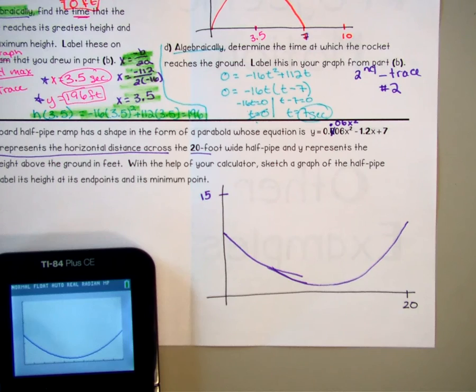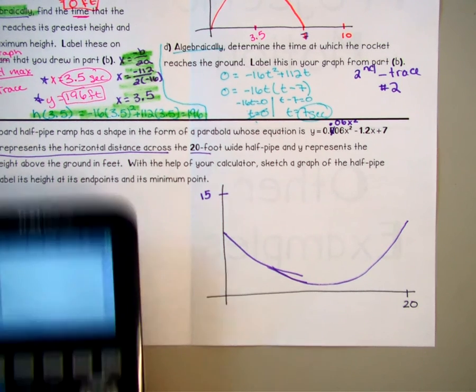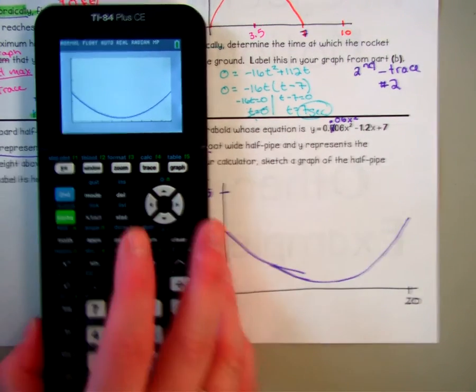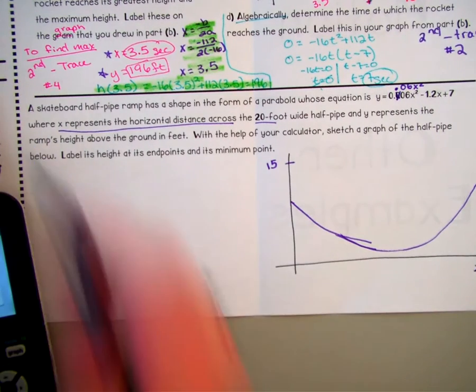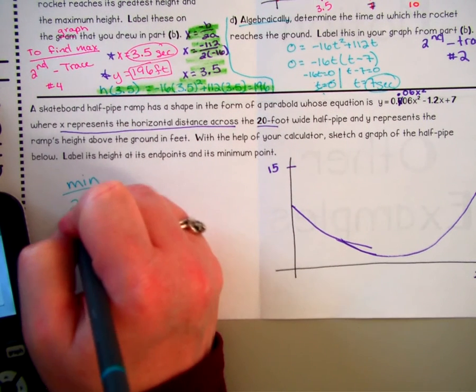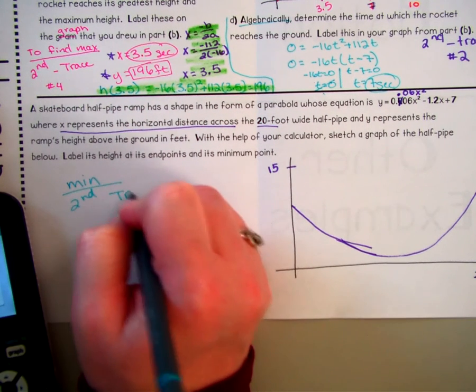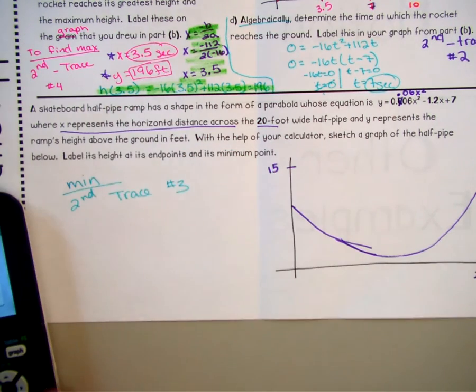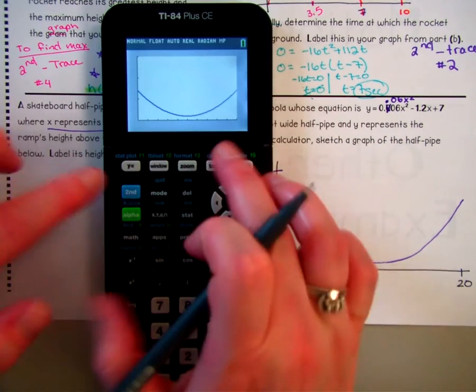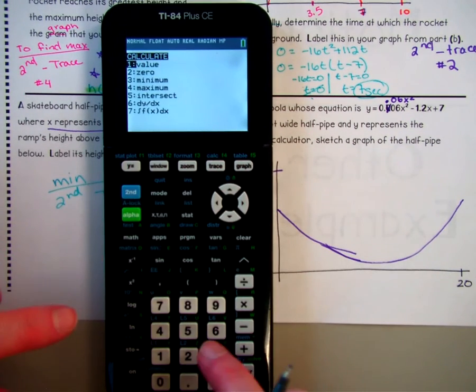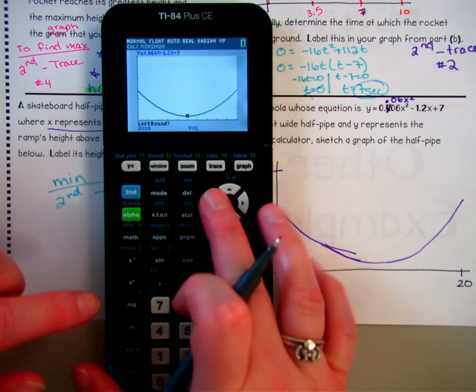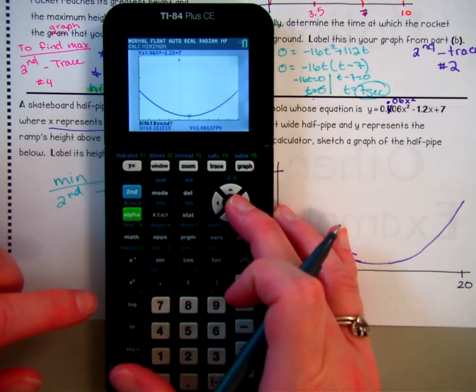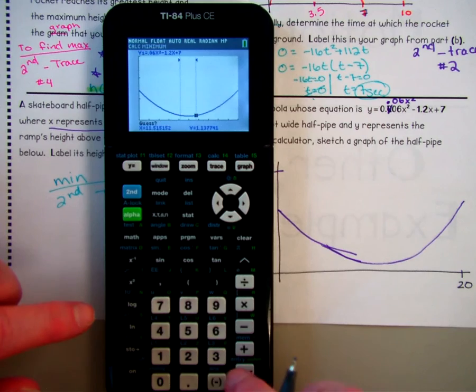So label its height at its end point and its minimum point. Okay. So I'm going to go for the minimum first. So minimum, again, second, trace, and then it's choice number three. So second, trace, choice number three, left bound. So I'm going to move over to the left a little bit. Move over to the right. And then hit my enter.